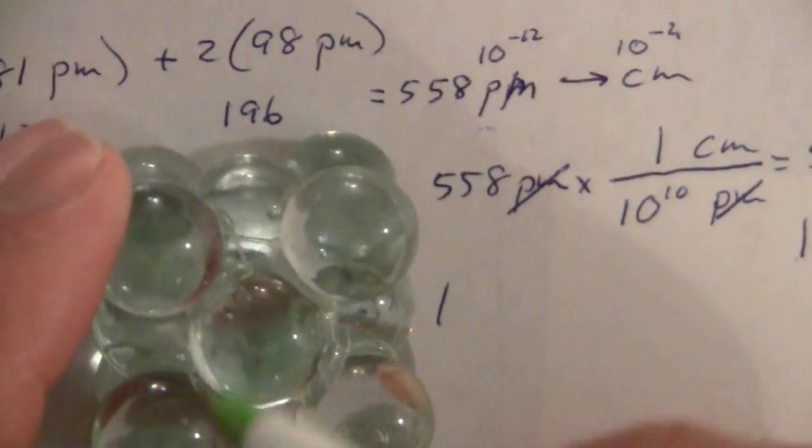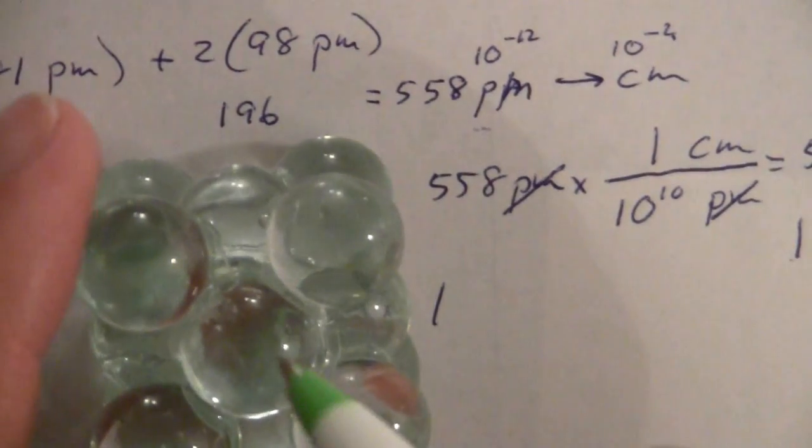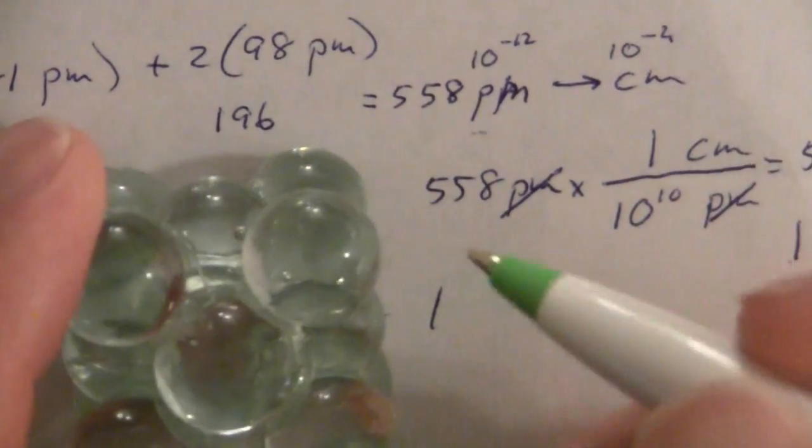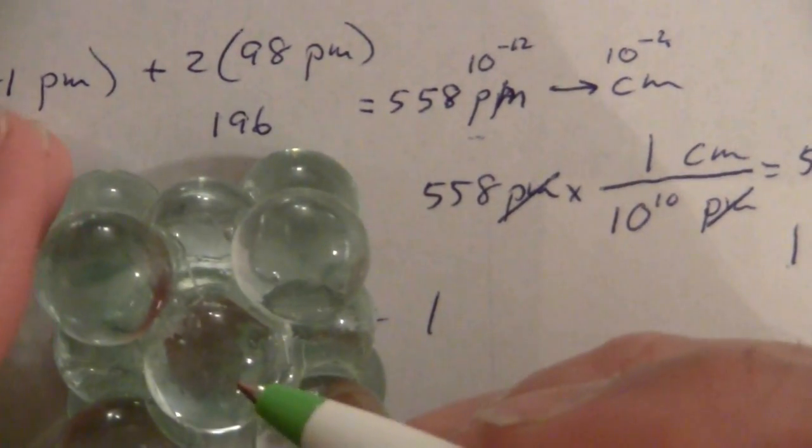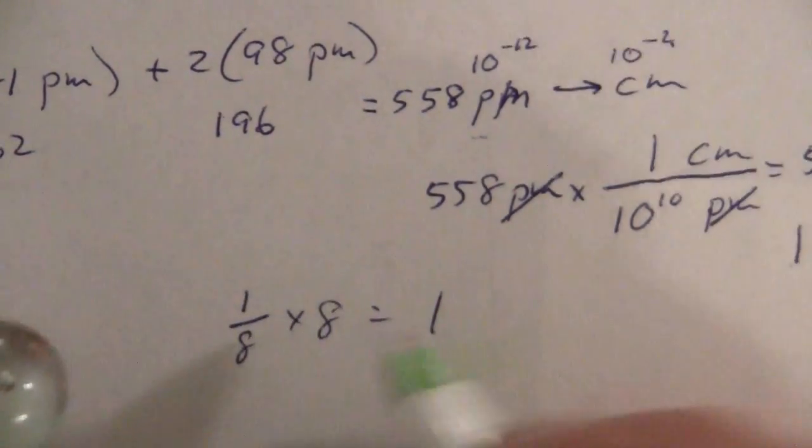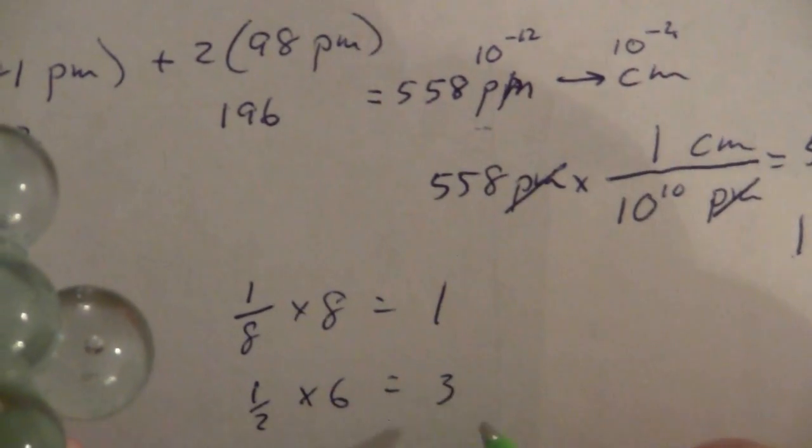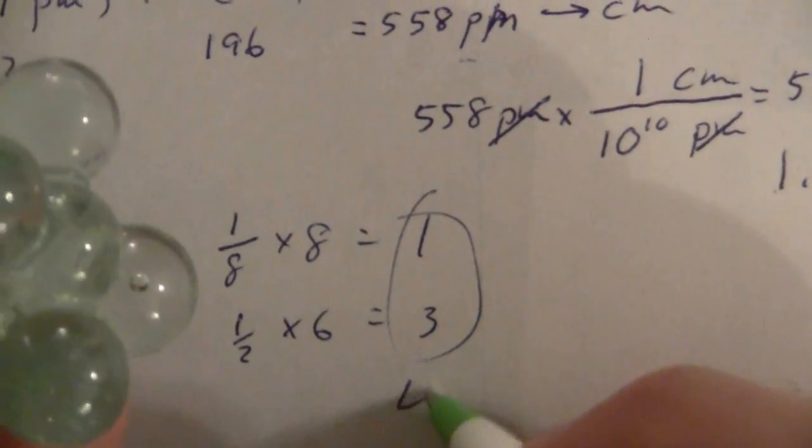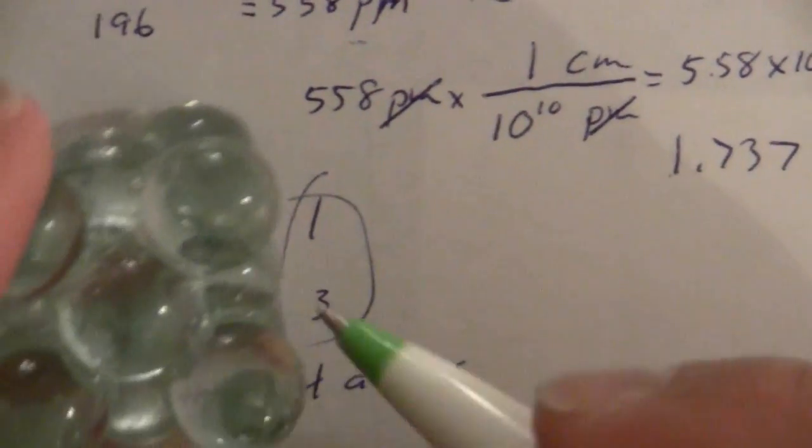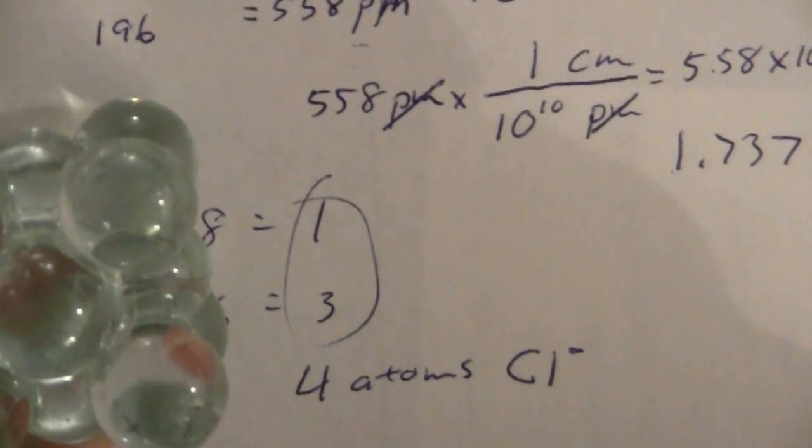And then we have the faces. Each face, when we take that, the part that's within the cubic, within the unit cell, will be half of an atom, and we have six faces. So, one-half times six is three, so all together, we have four atoms. That is for the chloride ion.